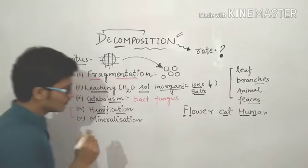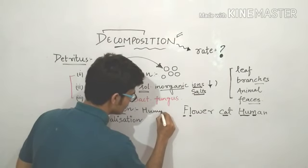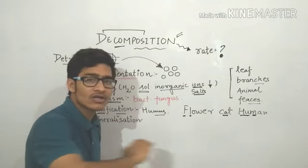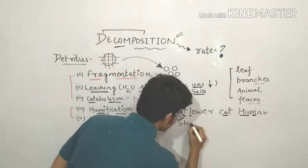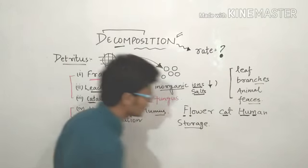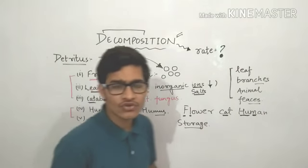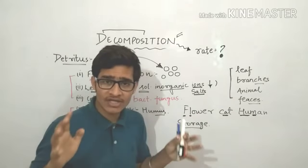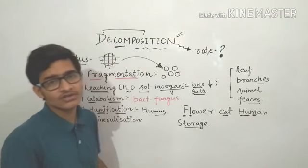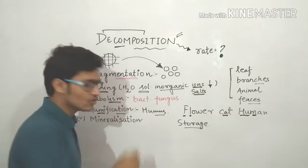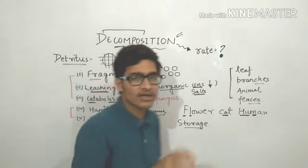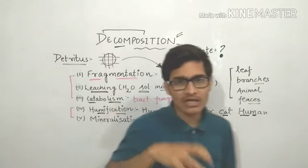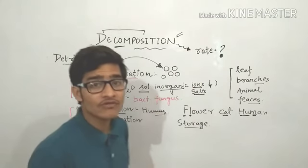Now it's humification. Humification comes from the formation of humus. Humus is a very dark, amorphous layer on the ground which behaves as a storage of nutrients. It is a colloid, and it is very hard to break this colloid easily. So the decomposition of humus is quite a slow process. The dark amorphous colloidal layer formed on the ground serves as nutrient storage — that is humus and the process is humification.